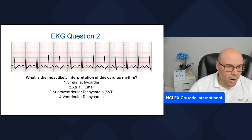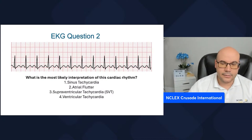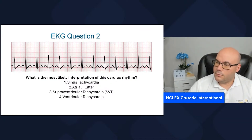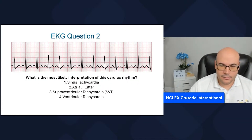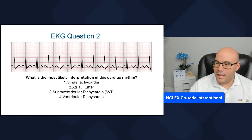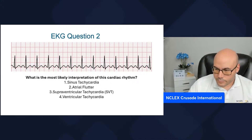The heart rate is about 130 beats per minute. The PR interval is normal, and the QRS is normal. And there's a P for every QRS — one P and one QRS.